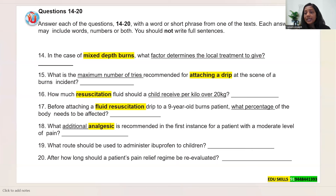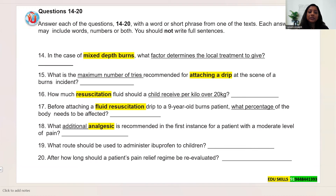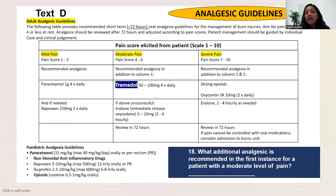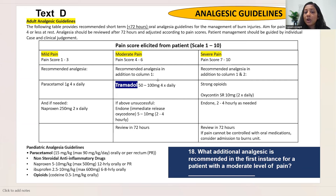Question 18: 'What additional analgesic is recommended in the first instance for a patient with a moderate level of pain?' From Text D. Moderate pain means pain score 4–6. The text says: recommended analgesia in addition to column 1 — column 1 is paracetamol — is tramadol. They only ask for the name, so the answer is: tramadol.